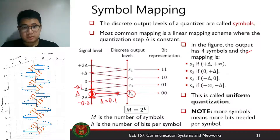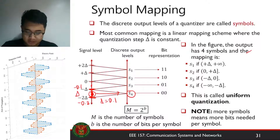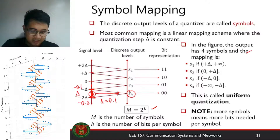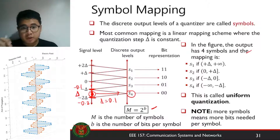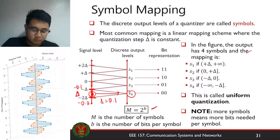Once we get our symbols, we can represent them in terms of bits during the encoding process. The number of discrete output levels is related to the number of bits by the equation m equals 2 raised to b. If we have more bits per symbol, we can have more discrete output levels and a smaller delta. This type of quantization, where the distance between two boundaries is the same constant delta, is called uniform quantization.